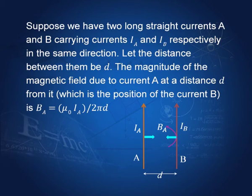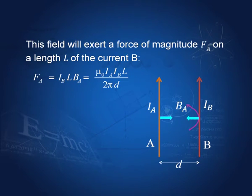Suppose we have two long straight currents A and B in the same direction, parallel to each other, with distance D between them. The magnitude of the magnetic field due to current A at distance D, which we found last time, is B_A. This field will exert a force on conductor B. The force on B is I_B L B_A, where L is the length of the wire and I_B is the current. Substituting the value of B_A, the force is mu_0 I_A I_B L divided by 2 pi D.